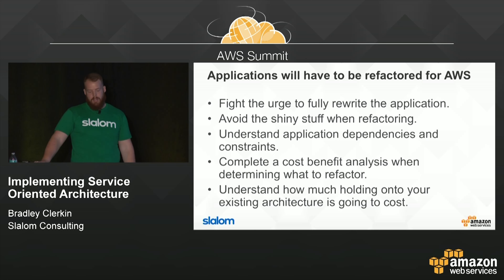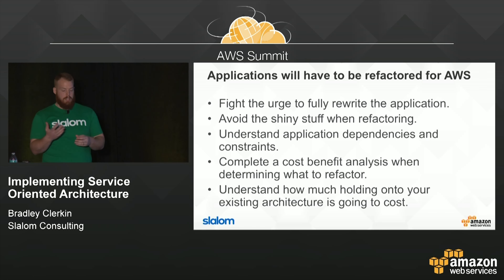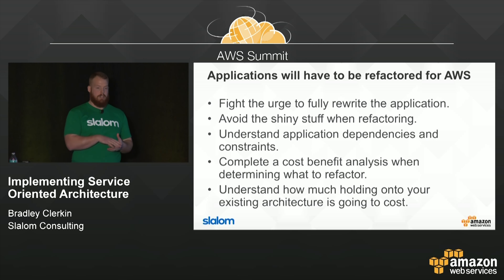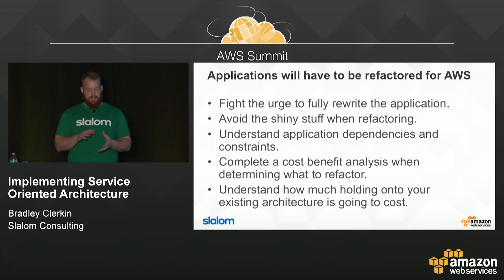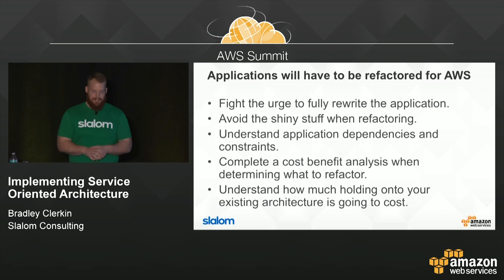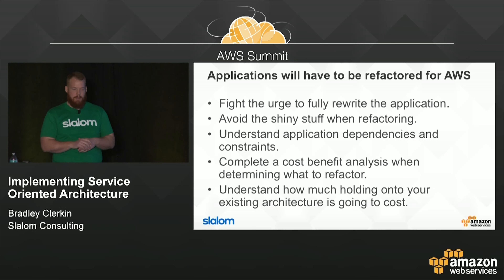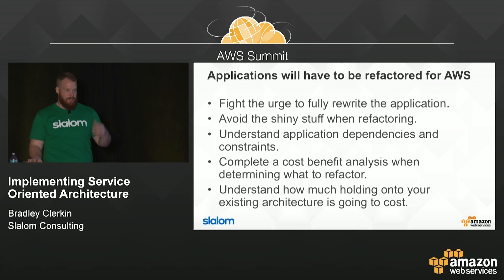Do a complete cost-benefit analysis when deciding what to refactor. Define the why before refactoring — don't just refactor to refactor. Understand how much it's going to cost you to hold onto your existing architecture versus adopting something new. Also understand what your existing architecture will cost in AWS, because people have emotional buy-in to what they've built. If you say 'we don't need NetApp anymore, we're just going to use S3,' you might crush a SAN administrator who says 'that's been my life.' You have to show what it costs to administer a virtual NFS appliance in the cloud versus just using S3.